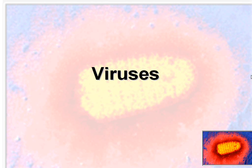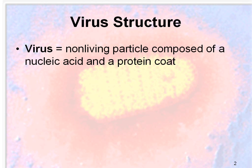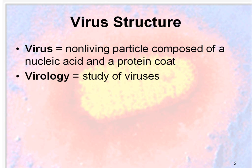Hi guys, so this is a brief PowerPoint about viruses, which is covered in chapter 19 of your textbook. Down below you'll see an image of a rabies virus. Viruses have a particular structure. They vary a bit, but there is a certain pattern that they follow. They're defined as being a non-living particle composed of a nucleic acid and a protein coat — very simple. And virology is really just the study of viruses.